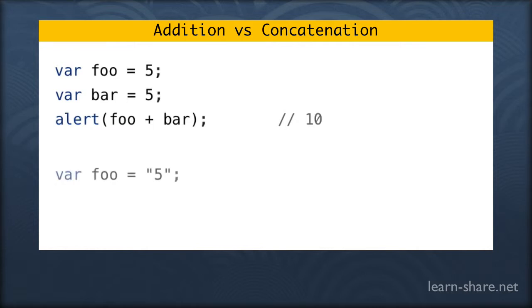On the other hand, if we create these variables with the digit 5 but inside double quotes, as a string, and then we use the same code, the addition operator, to add them together, what's going to happen is concatenation, not addition. JavaScript puts them side by side, giving the result 55.